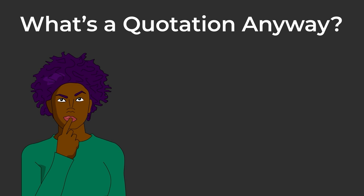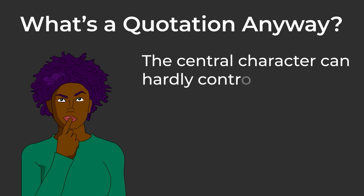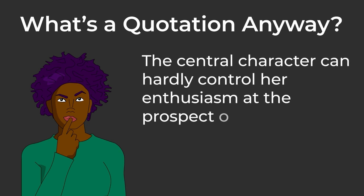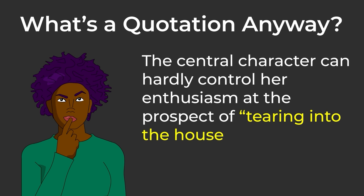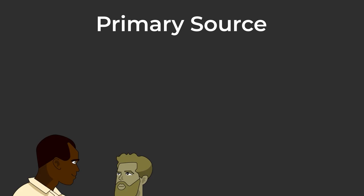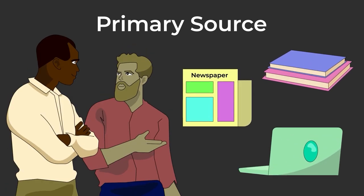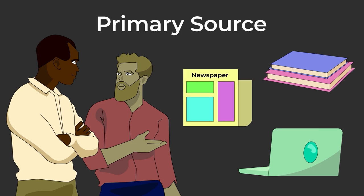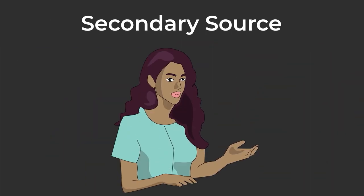What's a quotation anyway? A direct quotation can be as short as part of a line, such as: the central character can hardly control her enthusiasm at the prospect of "tearing into the house like a tornado on steroids" — to as long as a significant passage taken in its original form from the work you are using, whether it is the primary source, such as the person you interviewed, or the article, books, or story you're studying, or the secondary source — someone else's comments on that article, etc.